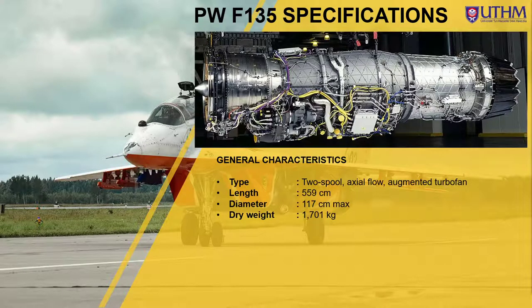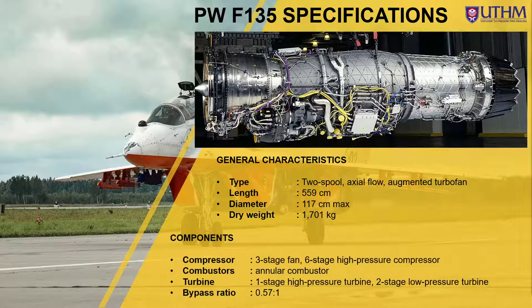For the specifications, the engine is a two-spool axial flow augmented turbofan, which means it has an afterburner, with a full length of 559 centimeters and a max diameter of 117 centimeters. It has a dry weight of 1,701 kilograms — dry weight meaning the weight without the fuel and oil on the engine.